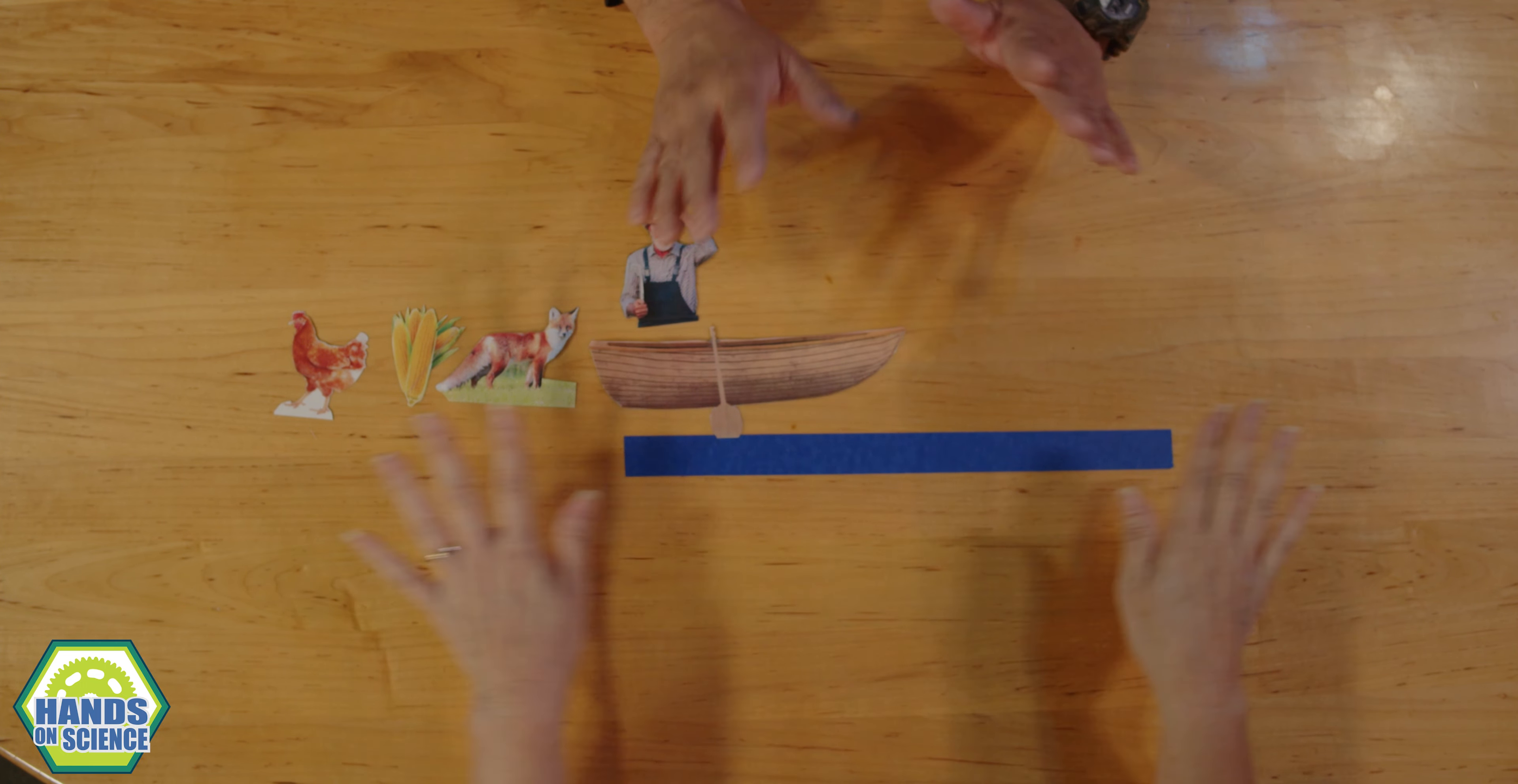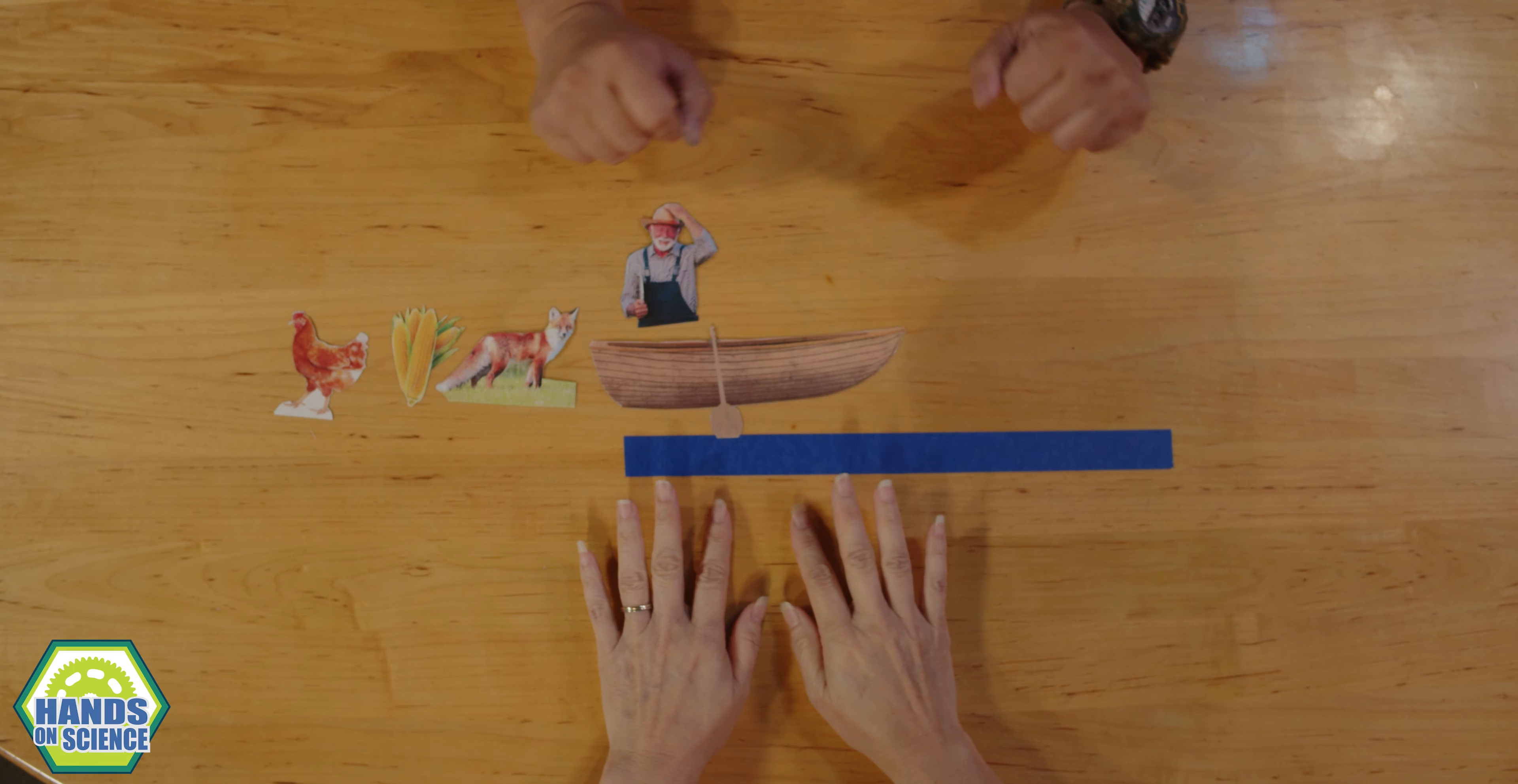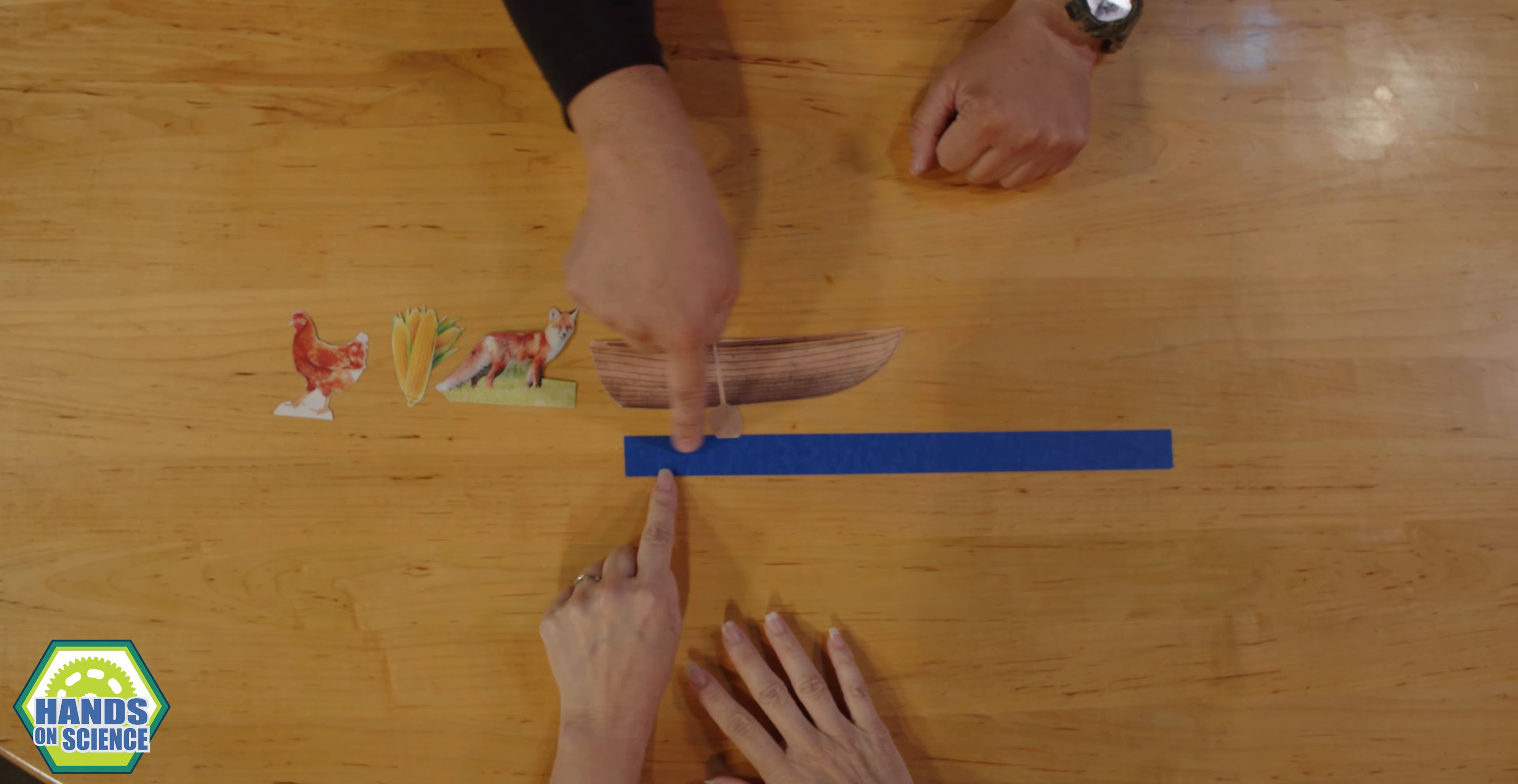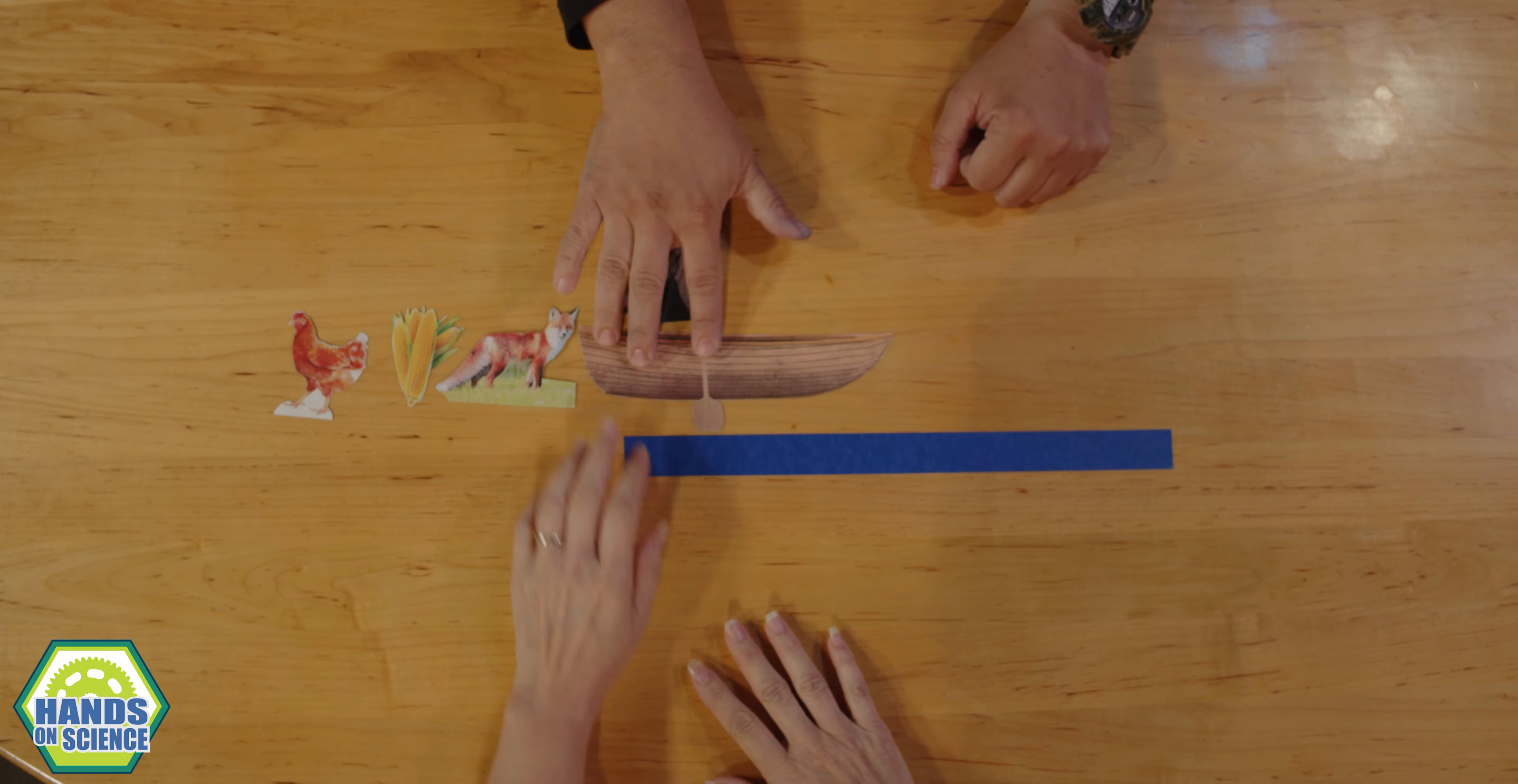What's going on? I have a riddle for you. You do? So I'm just using a blue piece of tape. This is the river. Okay, river.